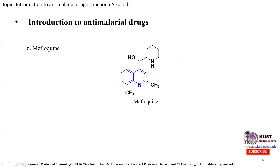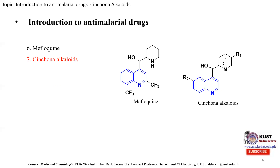Mefloquine has the quinoline unit substituted at positions 2 and 8 with trifluoromethyl groups and at position 4 with an alcohol and piperidine ring, giving it excellent anti-malarial activity. The last and most important class is cinchona alkaloids. When the R1 and R2 groups of the general cinchona alkaloid structure are substituted differently, we obtain different alkaloids active against malaria.